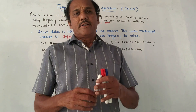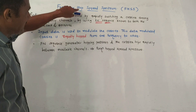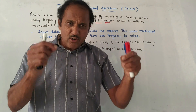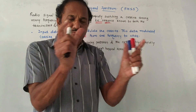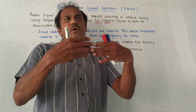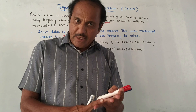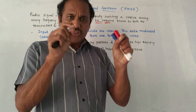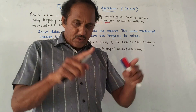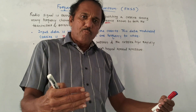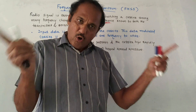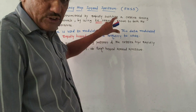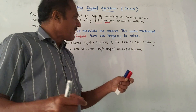Hello and welcome back to this channel. Today's topic is Frequency Hop Spread Spectrum, that is FHSS. The basic meaning of 'hop' is frequency slot. From the exam point of view, questions may be like: what is frequency hopping, explain transmitter and receiver of FHSS, what are the different types of frequency hop spread spectrum, or differentiate between slow and fast frequency hopping.